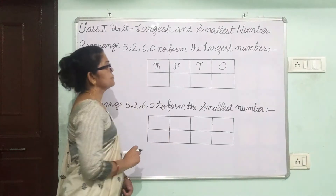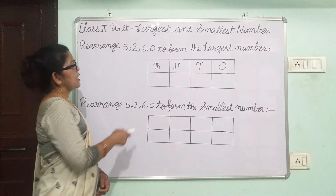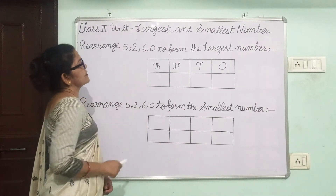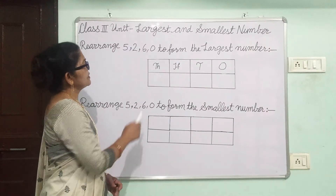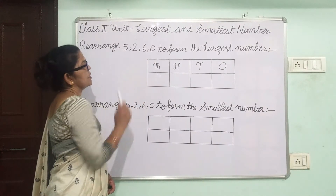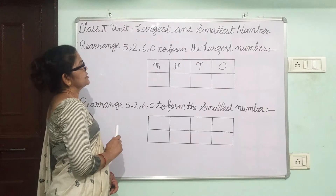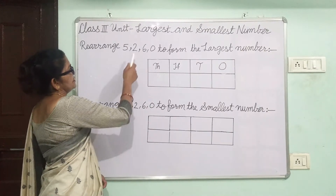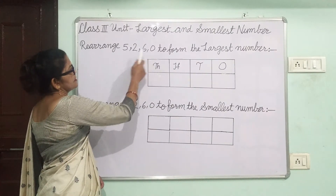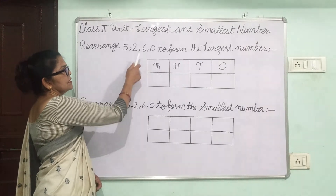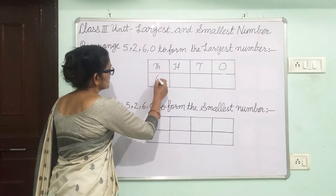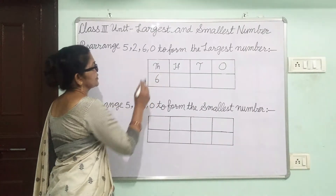Students, we know that the 1000s place has the largest value. So the largest digit will go in the 1000s place. Which digit is the largest in these digits? 6. Thus, 6 will go in the 1000s place.